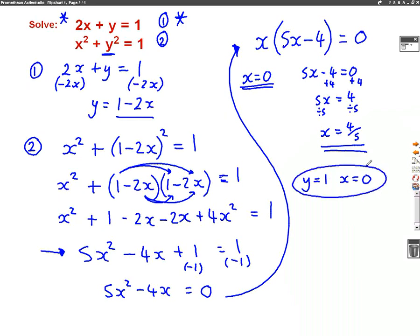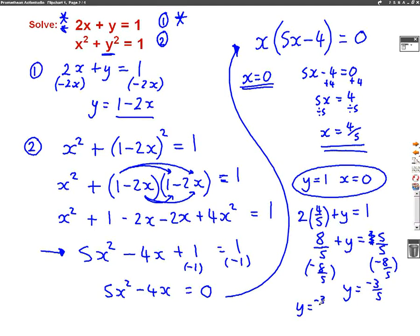The second answer is what happens when I substitute x is 4 over 5 into this first equation. So when x is 4 over 5, we'll get 2 times 4 over 5 plus y equals 1. 2 times 4 over 5 is 8 over 5 plus y equals 1. Well it's better here if I write 1 as a fraction with 5 at the bottom. So if I rewrite 1 as 5 out of 5, because that's a whole, 5 out of 5 is a whole, then I'll have fractions both with 5 at the bottom. So I can take away 8 over 5 on both sides, and I'll be left with y equals minus 3 over 5. So my second answer is y is minus 3 over 5 and x is 4 over 5.